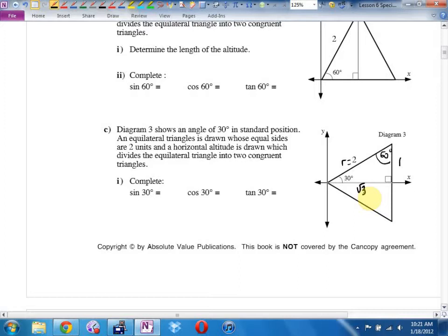Where the bottom angle is how big? 30. And the top angle is how big? Where the bottom angle is pi by 6 radians, 1 6th of 180. And the top angle is how big? Pi by 3, 1 3rd of 180.